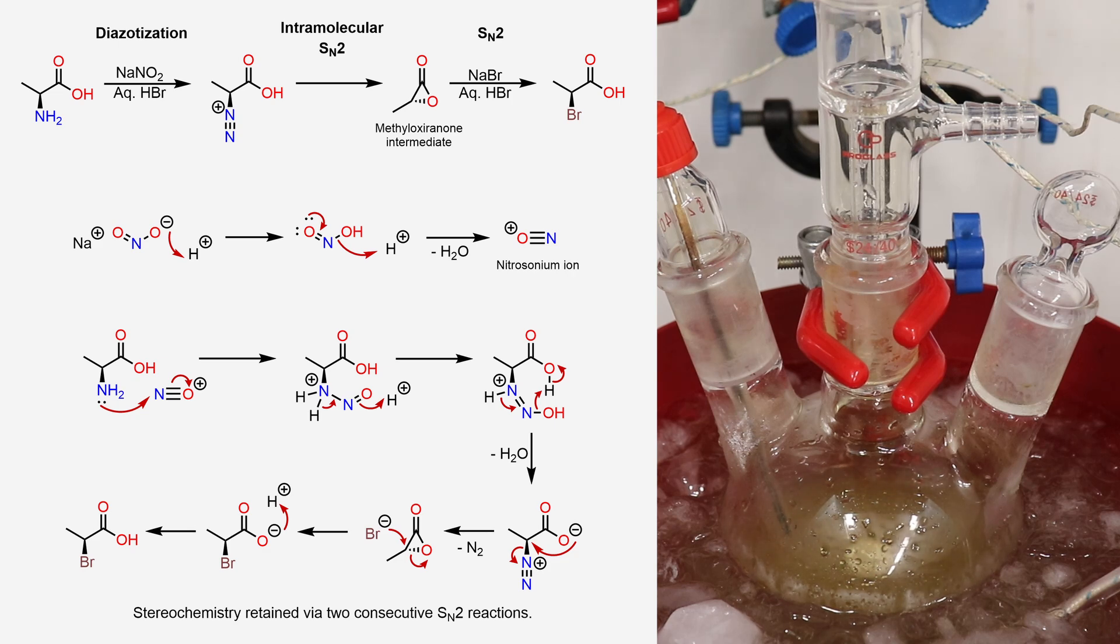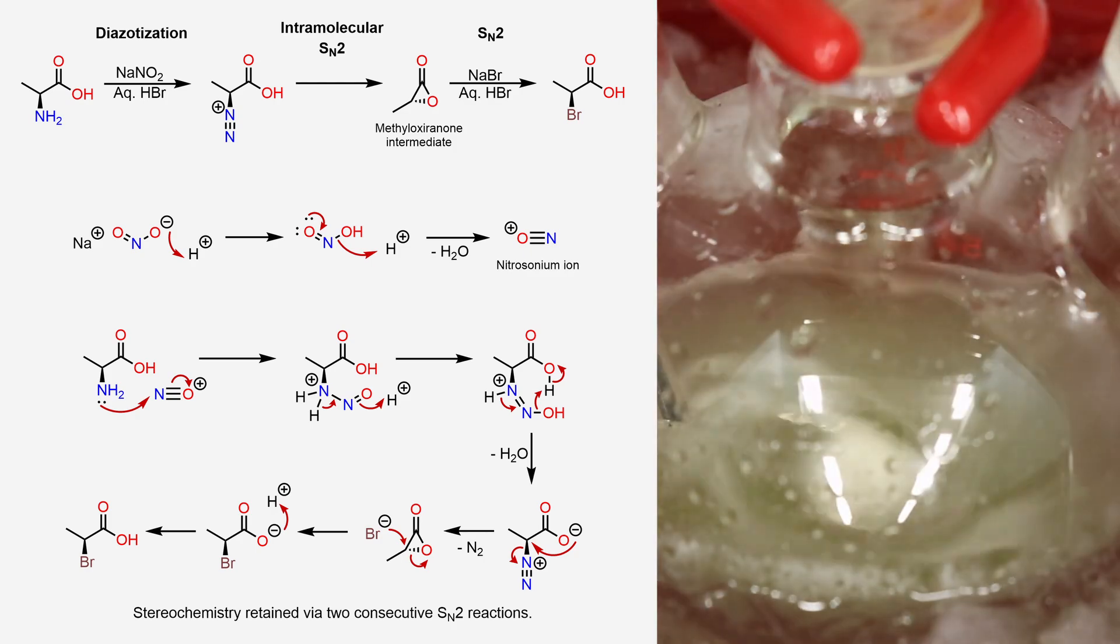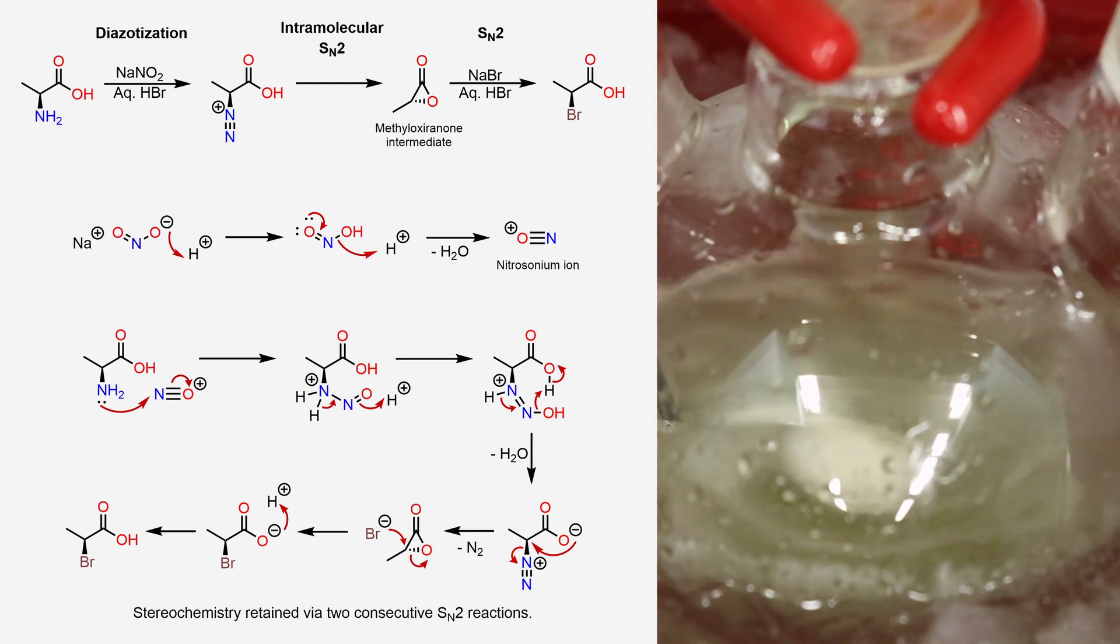The three-membered ring is then opened in an SN2 fashion by bromide, which again inverts the stereocenter back to its original conformation, which overall makes this reaction stereoretentive.